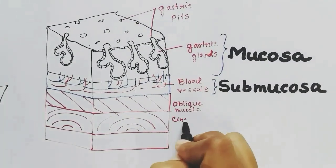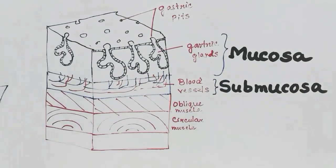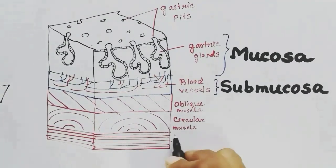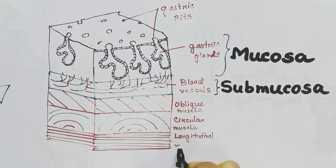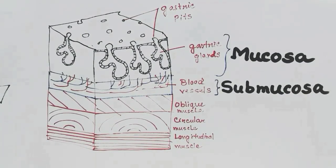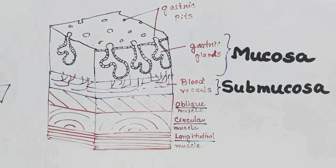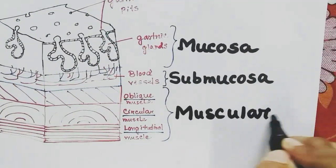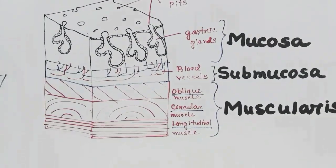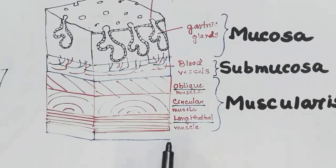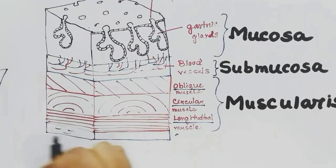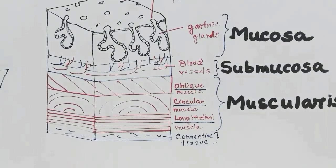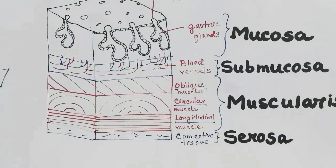The third smooth muscle layer is the longitudinal muscle layer. All three together make up the muscularis layer. Next to the muscularis layer is the serosa layer, which includes connective tissues.